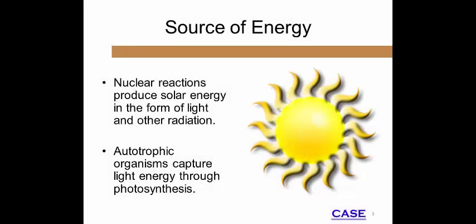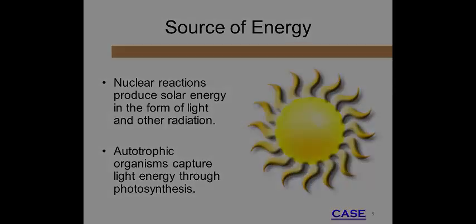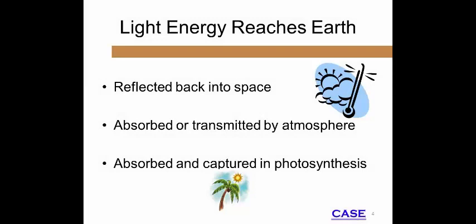A source of energy for living organisms is the sun. Autotrophs are organisms that are capable of producing their own food. They capture the light energy of the sun and convert it into other forms of energy through photosynthesis. Not all light energy that enters the atmosphere of the Earth is utilized for photosynthesis — a great deal of light energy is reflected back into space or held within the atmosphere.